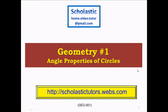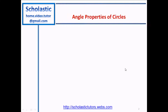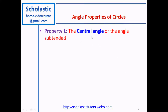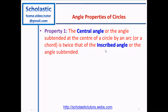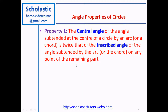Hello, welcome back to geometry — angle properties of circles. Let's look at the first property. Property number one: the central angle, or the angle subtended at the center of a circle by an arc or a chord, is twice that of the inscribed angle, or the angle subtended by the arc or the chord on any point of the remaining part of the circle.